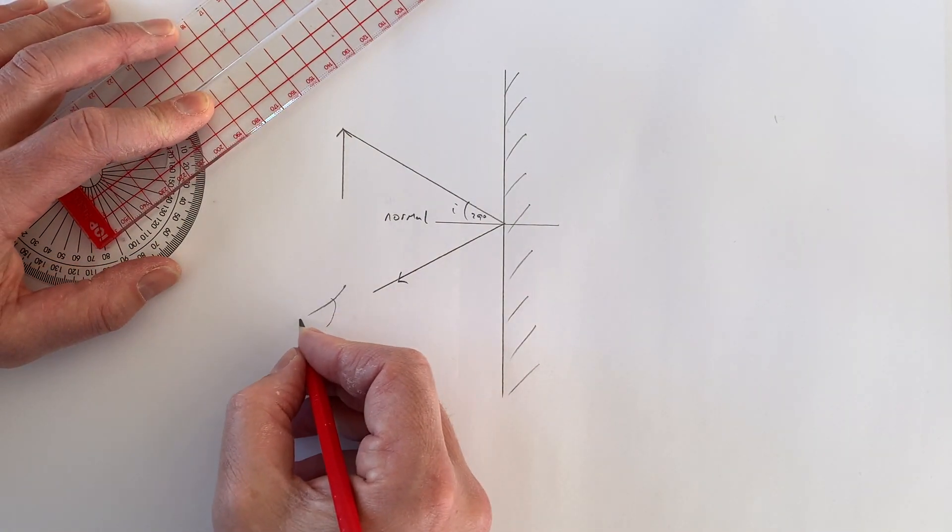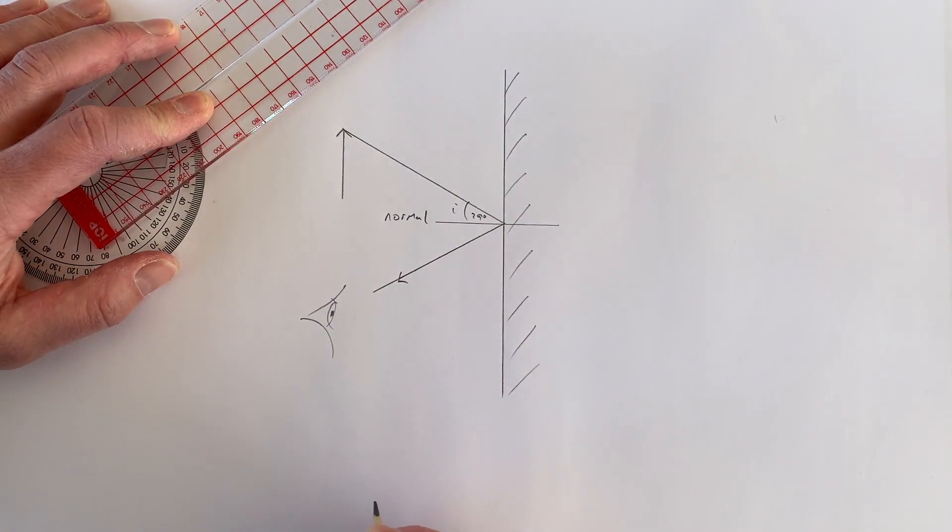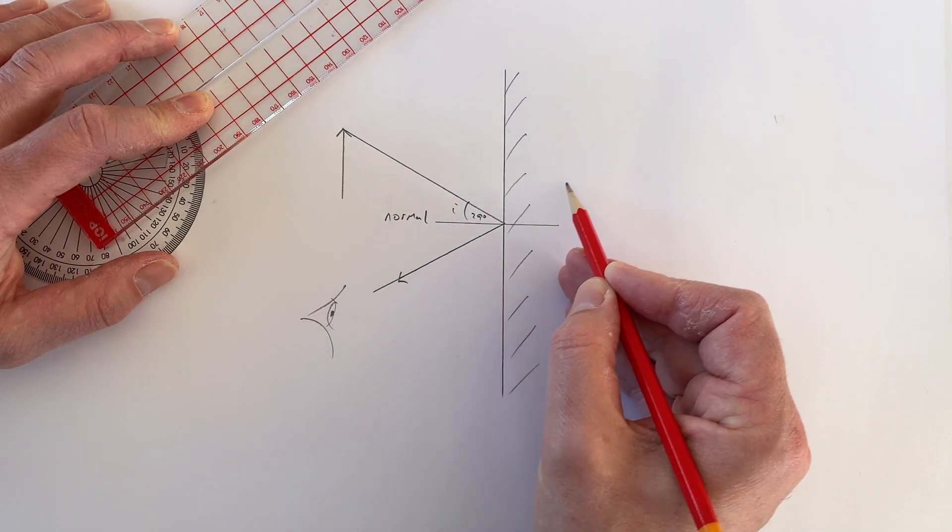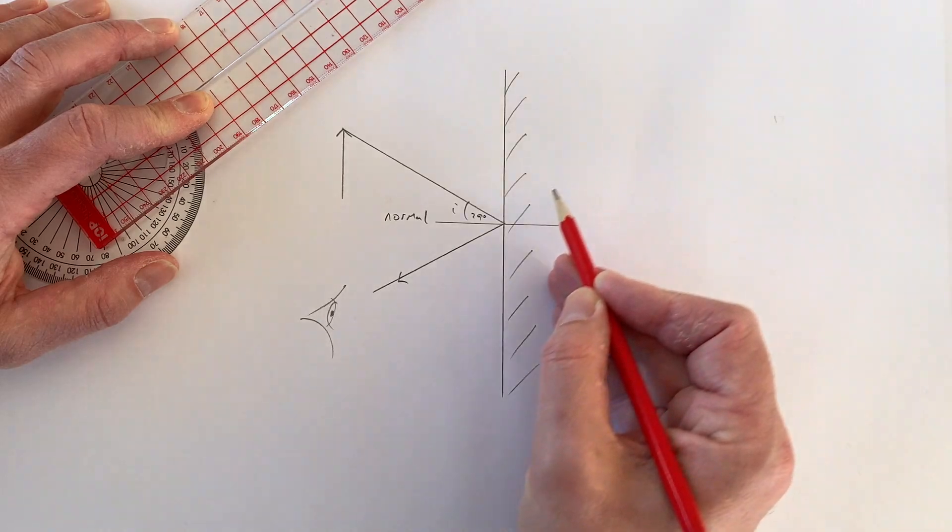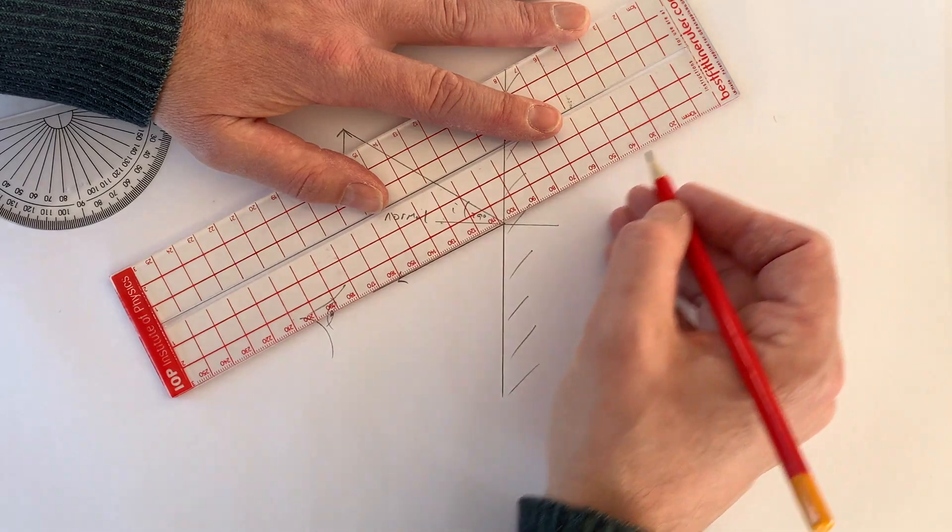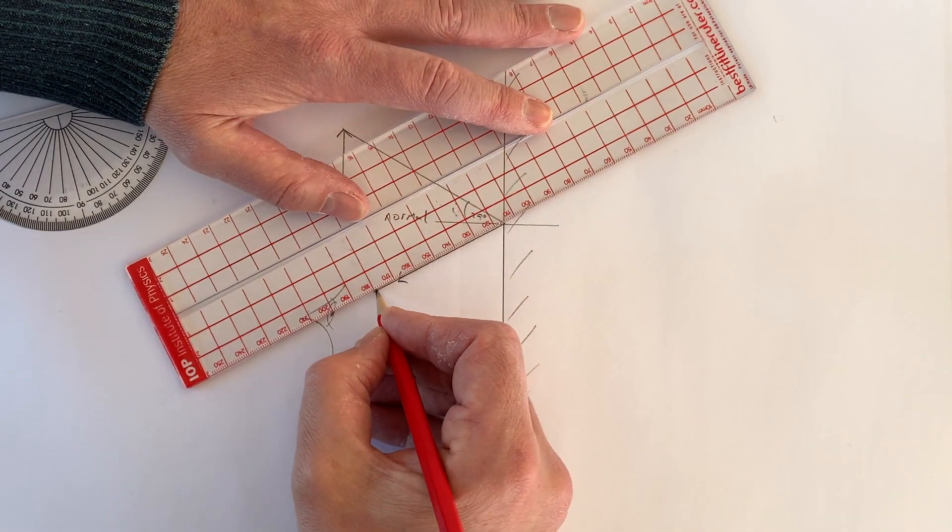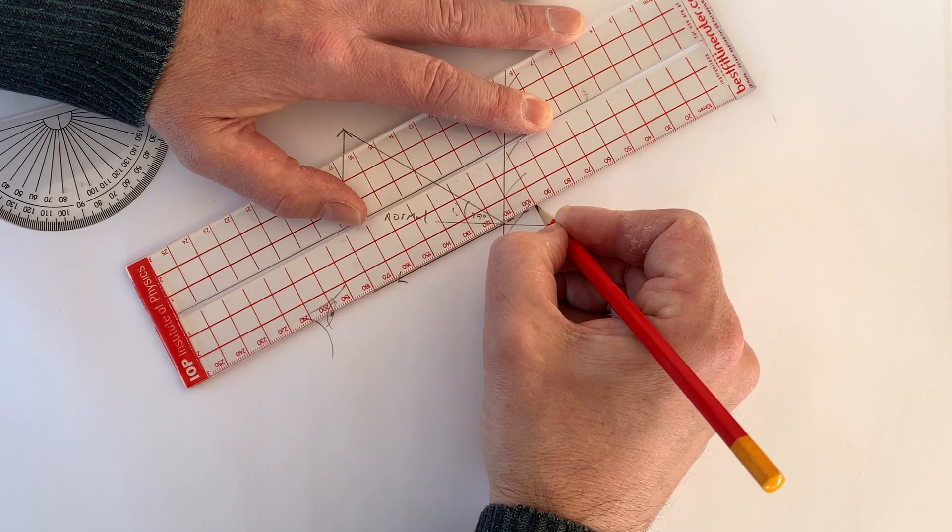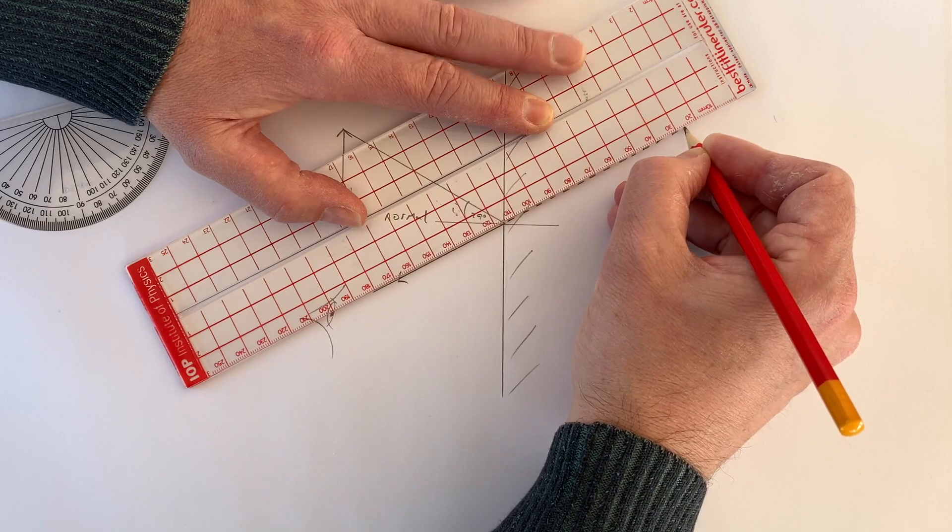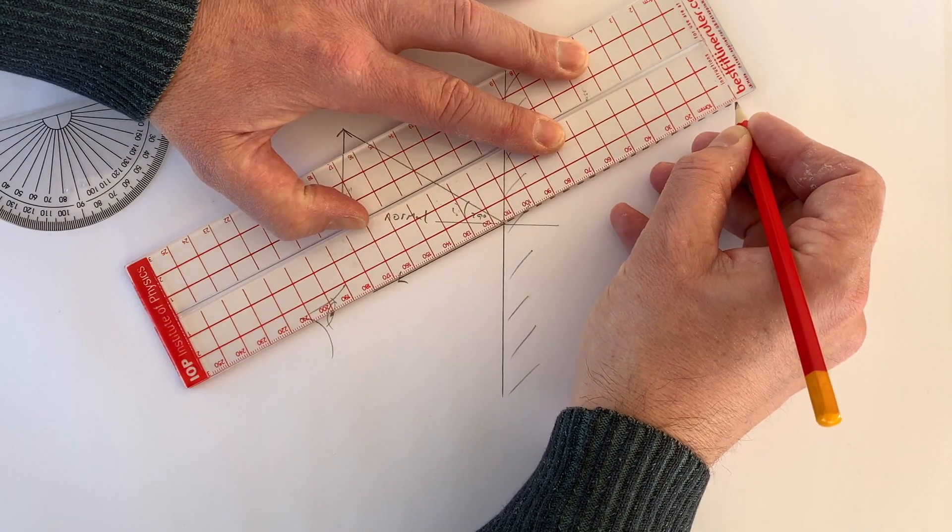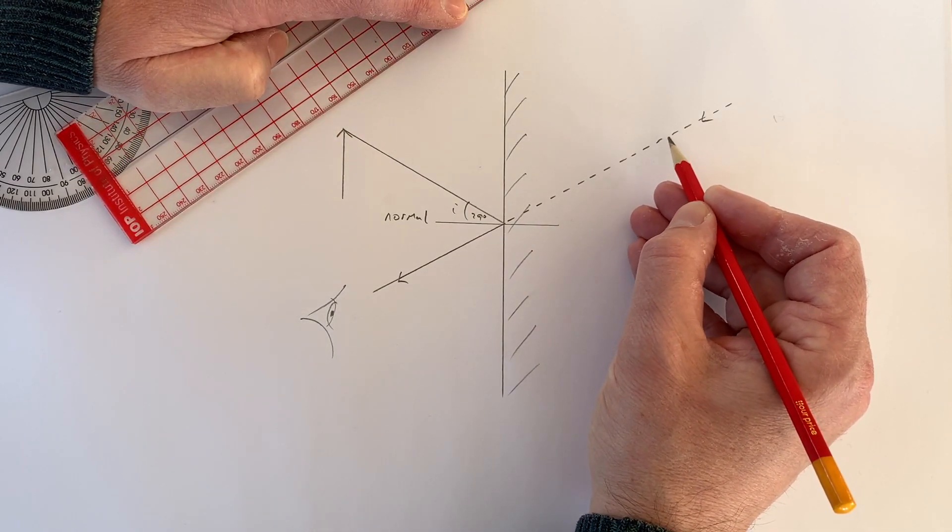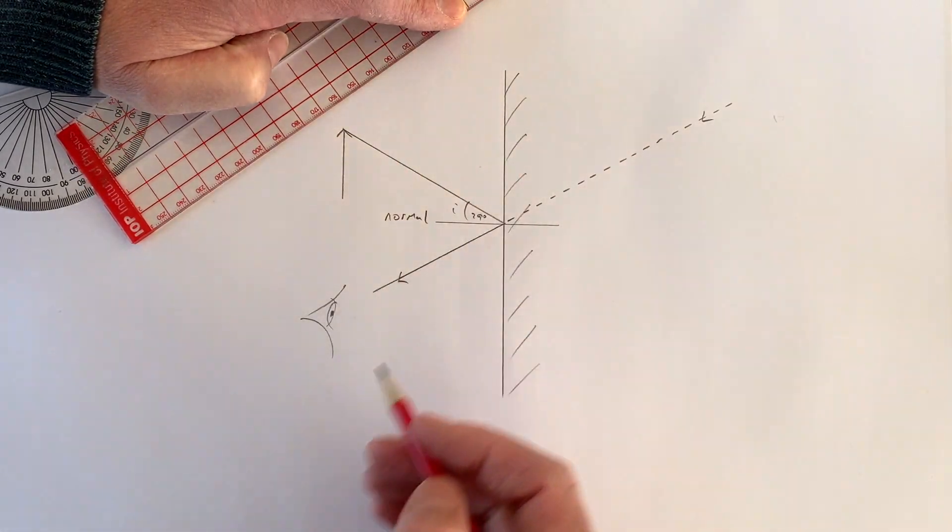Now, if an observer looks at—that's supposed to represent an eye—this ray of light, from their point of view, the ray of light appears to be coming from somewhere over here. The mirror reflects it in such a way that the light looks as though it's coming from that direction. I can show that by extending this line backwards. This dotted line represents what I'm going to call a virtual ray. And that virtual ray to the observer will appear as though it comes from a virtual object located somewhere over here.